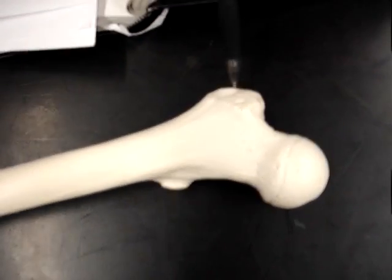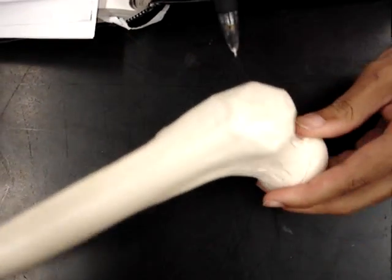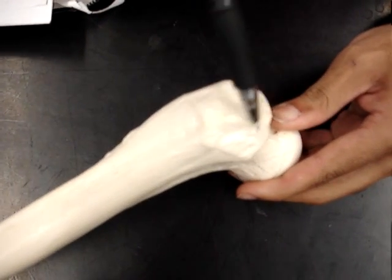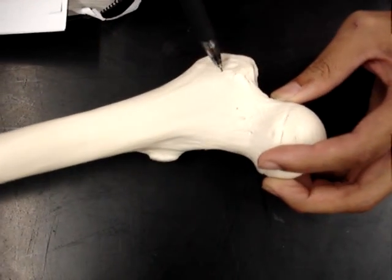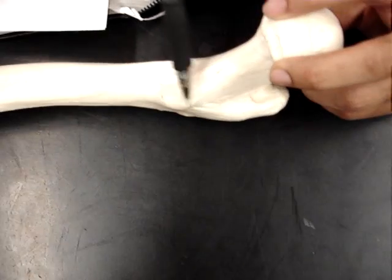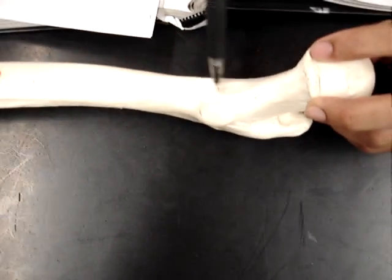Lateral to the head we have the greater trochanter, which is this area. And then medial and below the greater trochanter is the lesser trochanter.